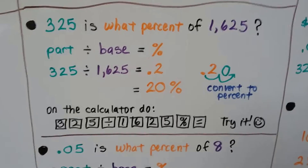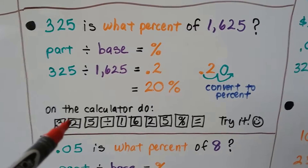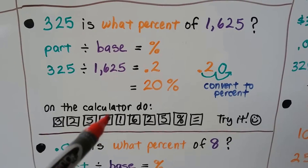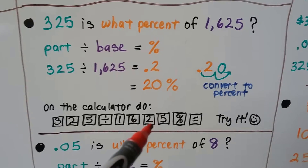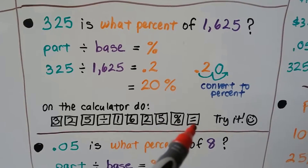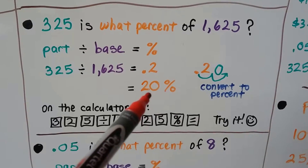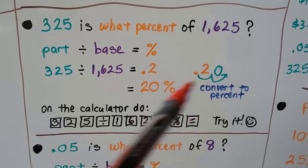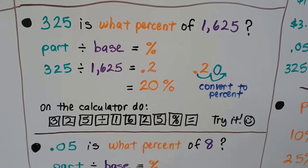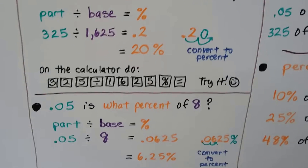You can also do it on the calculator by entering 3, 2, 5, then the division sign, then 1, 6, 2, 5, then hit the percent key and equals — it'll give you 0.2. But you're still going to need to convert it to a percent. You should try it with a few problems and see how the calculator works and if you've figured it out.